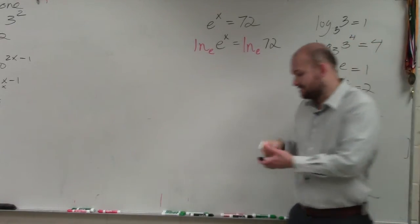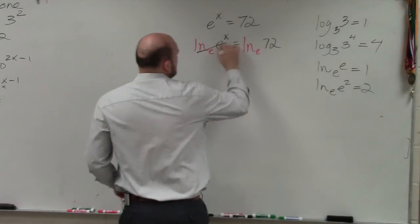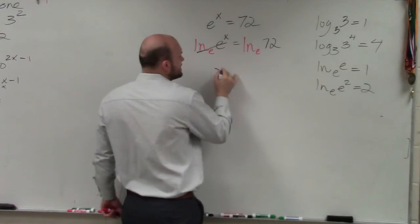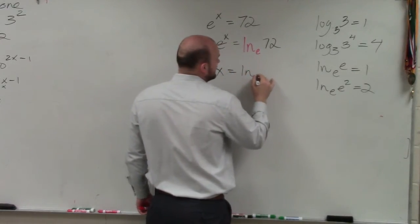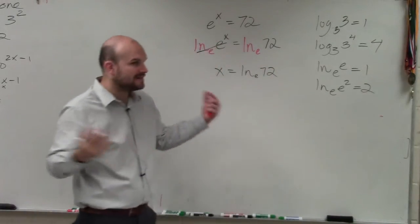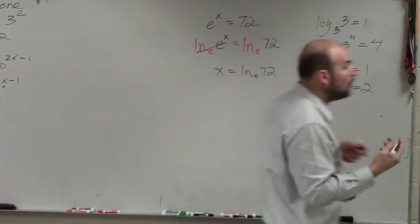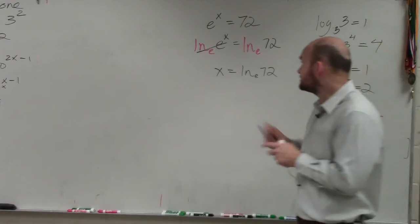Just like we had here. That equals x equals ln of e to the 72. Well, I could rewrite that back into exponential form. Or what you guys could think about this is, well, I can take the ln.